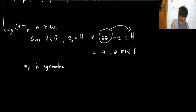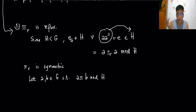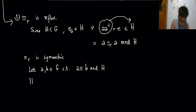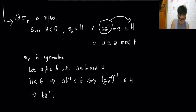For symmetry: let a, b in G such that a is congruent to b mod H. Since H is a subgroup of G, ab⁻¹ is in H, and because H is a subgroup, the inverse also lies in H. This gives ba⁻¹ in H, implying b is congruent to a mod H. Therefore the relation is symmetric.